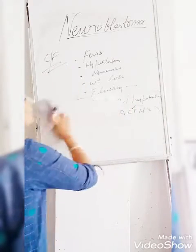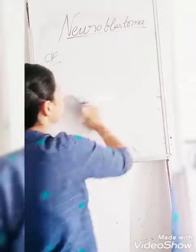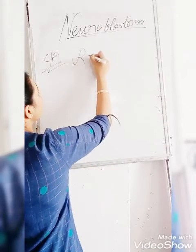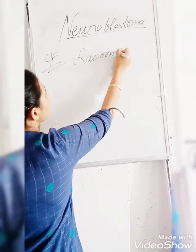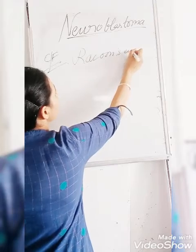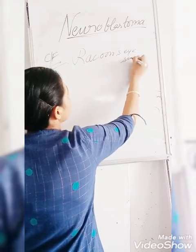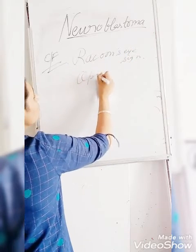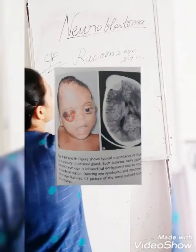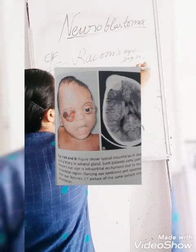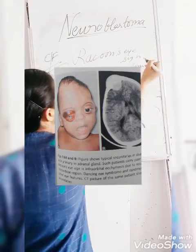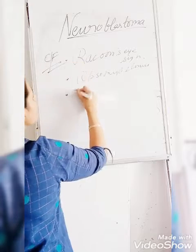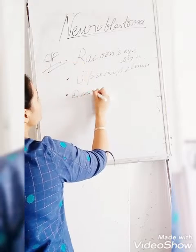Besides these, the major features you will notice are Raccoon's eye sign, myoclonus, and dancing eye syndrome.